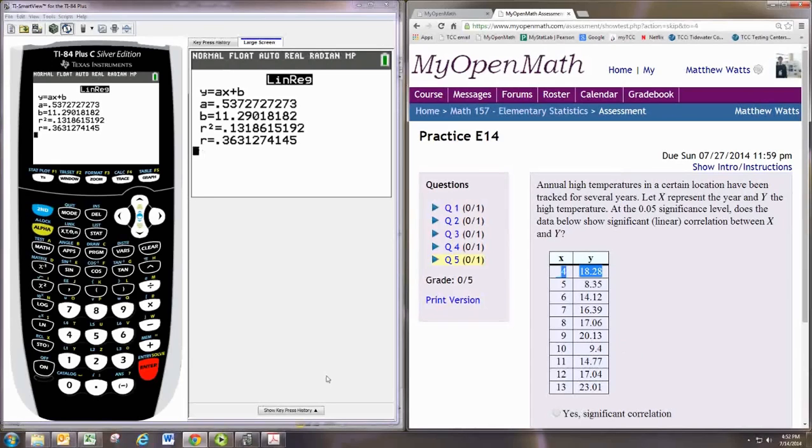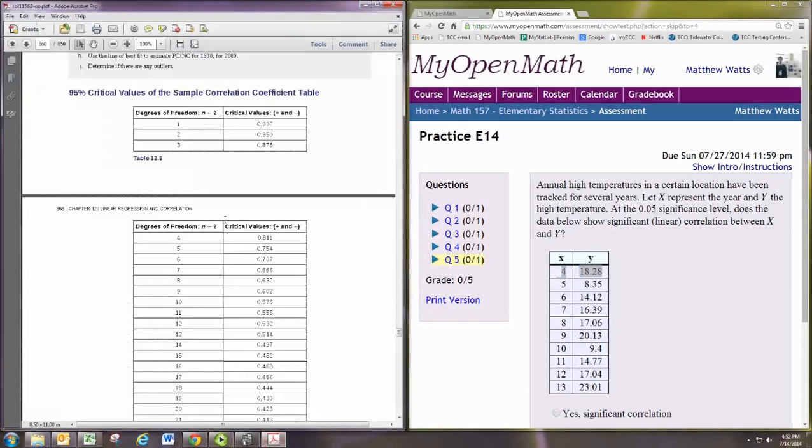And if you look up the table, there's a table in the back of the book at page 660, they do degrees of freedom as n minus 2. Alright so we'll find the degrees of freedom and then there's the critical value there.